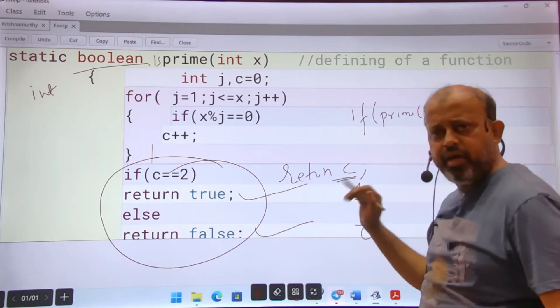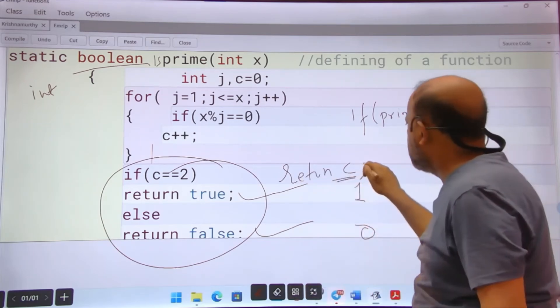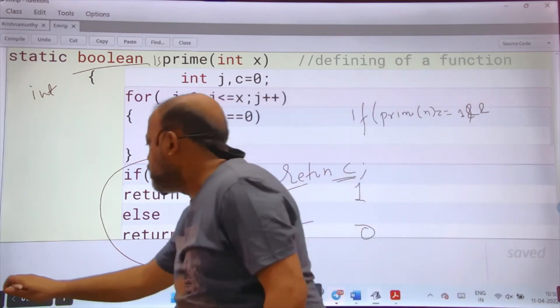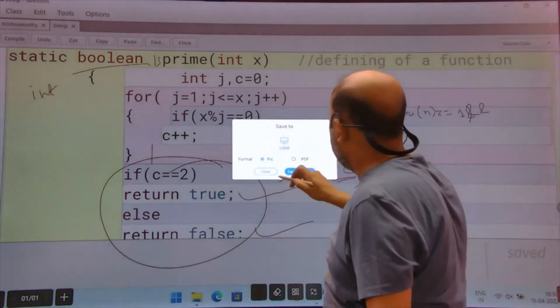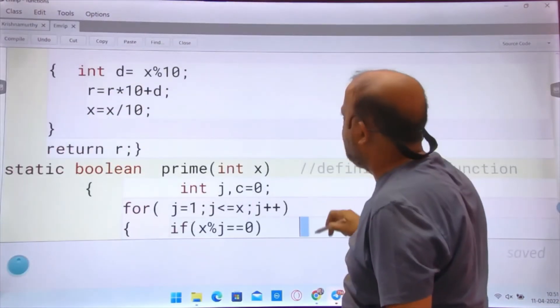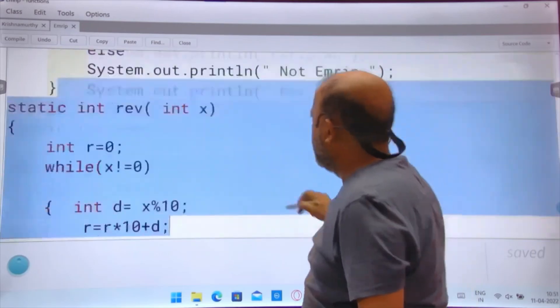See, when you return c, you are returning what? Number of factors. You can return one, zero. Understand - true false you can return, c is what? Number of factors. So when you will go at the top, when you will go at the top where checking is happening, here.